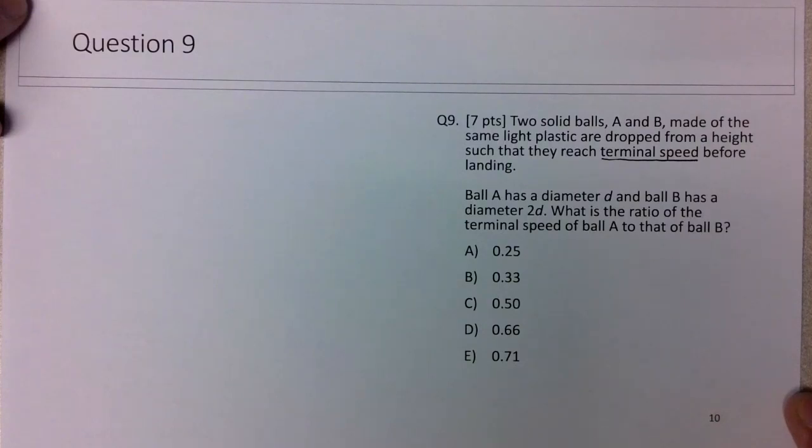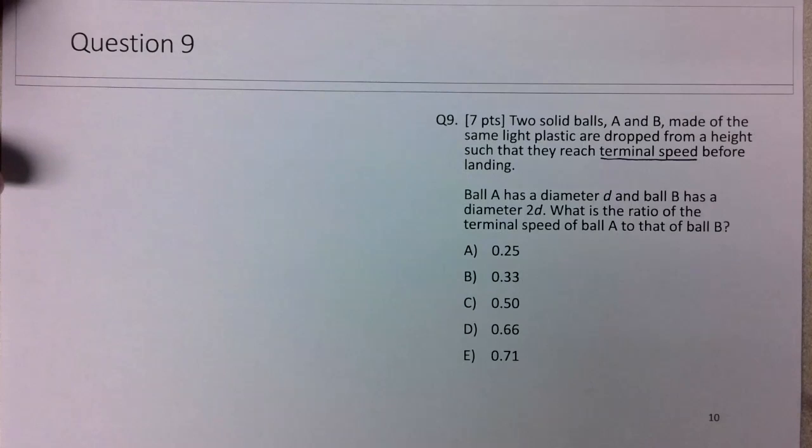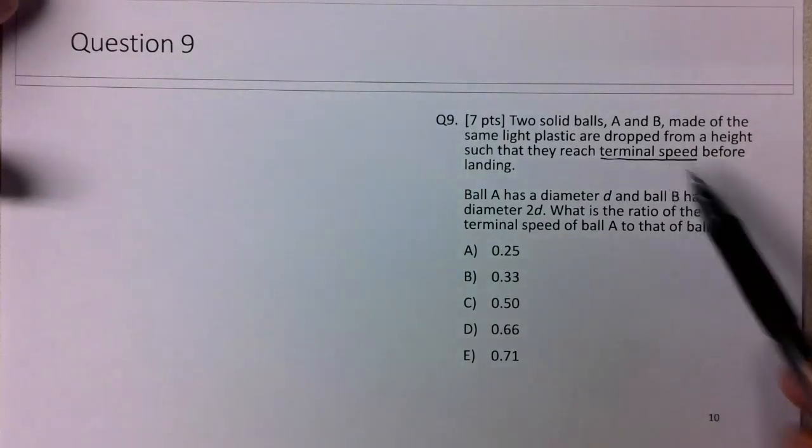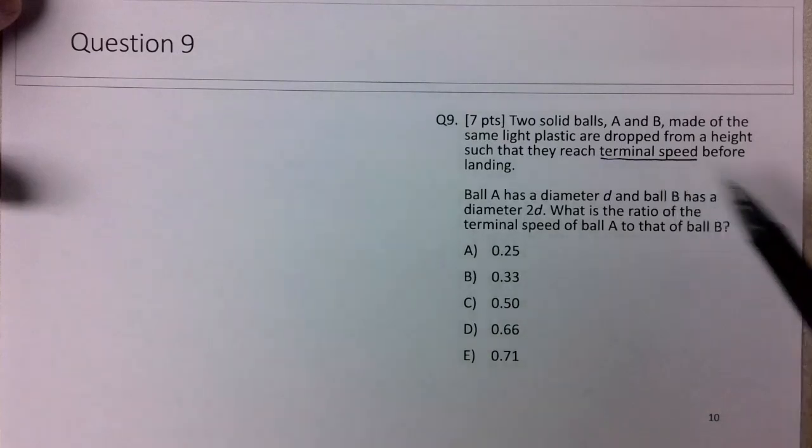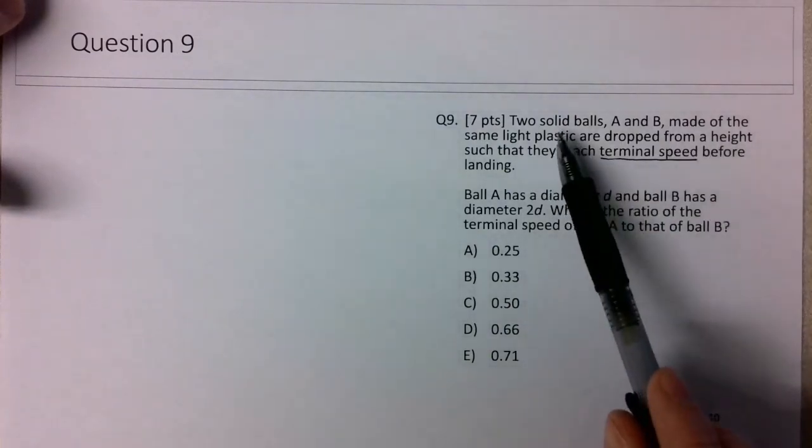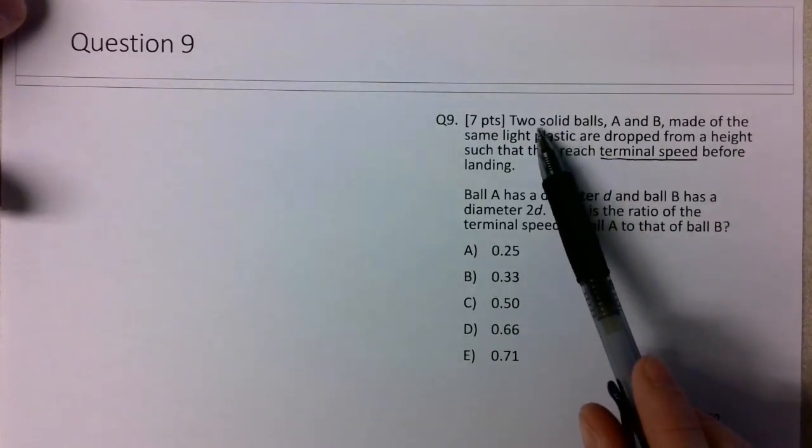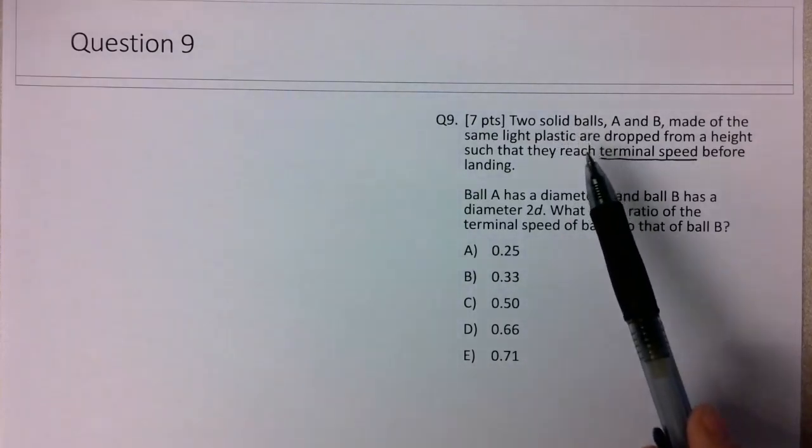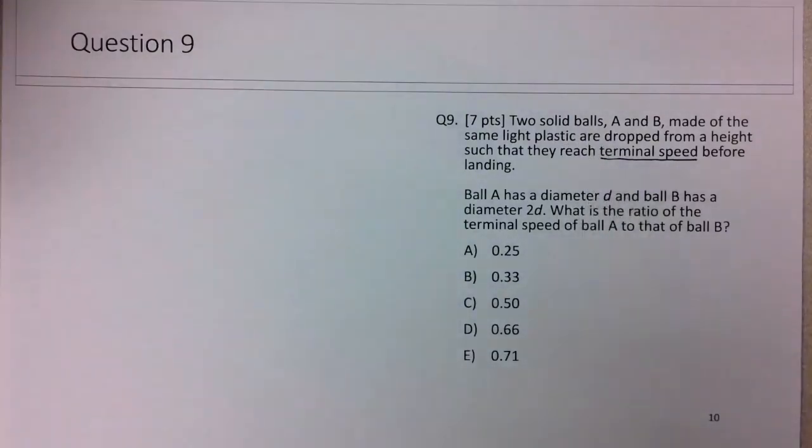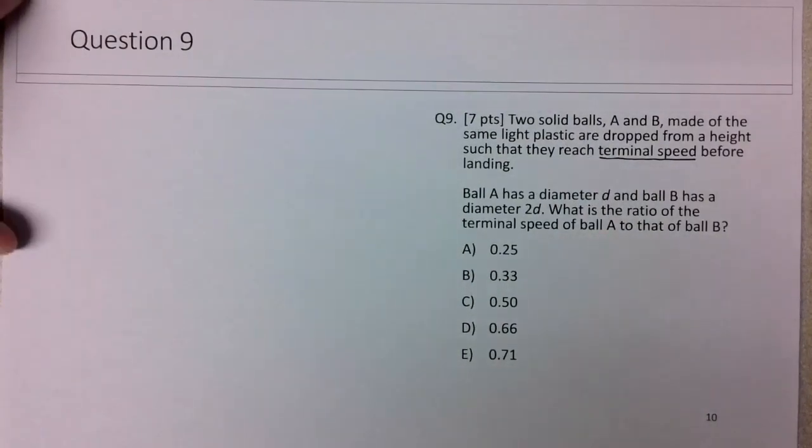Because it's terminal speed, we should be thinking about high Reynolds number. We assume that objects reach terminal speed at high Reynolds number. It would probably make this a better question if it stated that the balls are large and moving at a high enough speed, but I'll make those assumptions for this question.